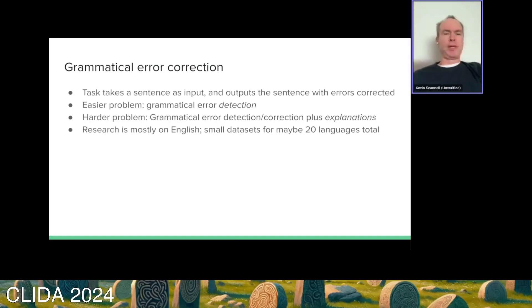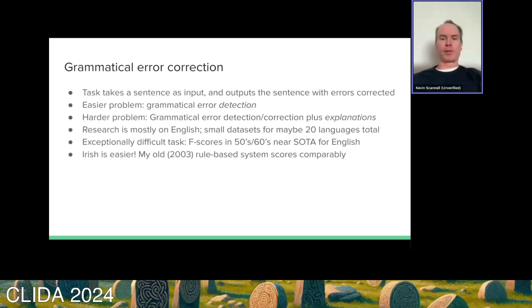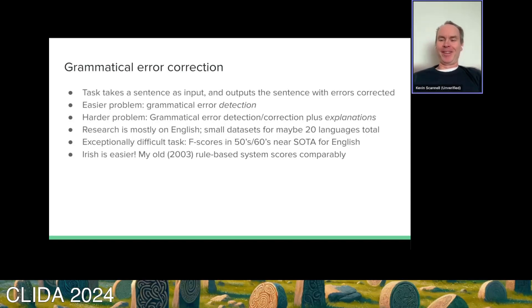Most of the research on this problem is on English, but there are small datasets for training grammatical error correction systems for about 20 languages. This is a truly difficult task, even with large language models — state-of-the-art F scores are only in the 50s or 60s. Fortunately, Irish and probably the other Celtic languages is easier, not because of any particular skills of my own, but because most of the errors that people make involve spelling and mutation errors, and those are detectable through local context.